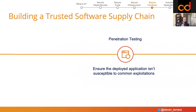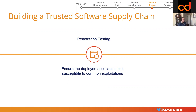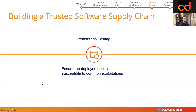Once we have a deployed application, we can start doing more dynamic testing. Penetration testing is a way to actually attack the deployed application and see if it's susceptible to common exploitation. Common examples would be a website with a form — making sure it's not susceptible to remote code execution, SQL injection, or cross-site scripting. There are tools like OWASP ZAP that can help with penetration testing. This is a good way to make sure your application isn't susceptible to some of the more common attacks it might experience out in the wild.